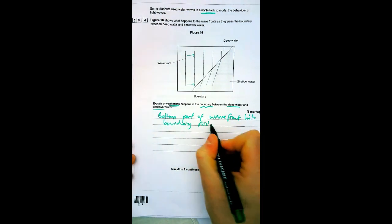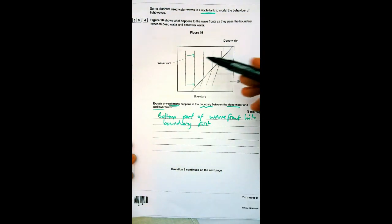Because it reaches the boundary first, we need to know what happens. When a wave goes from deep to shallow water, it refracts because there is a change in depth.